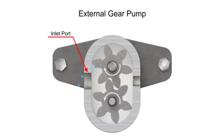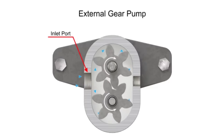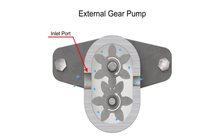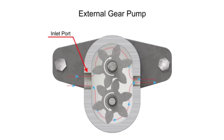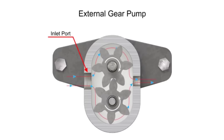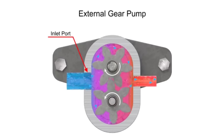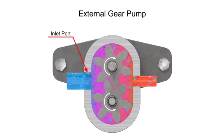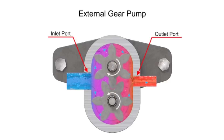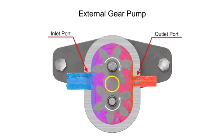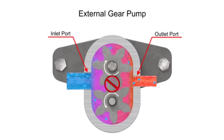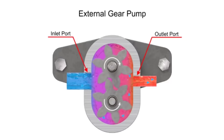Fluid flows into the cavities and is trapped by the gear teeth. As the gears rotate, a flow path is created around the outside of each one. Fluid trapped in the slots between teeth is carried around and discharged into the cavity with the outlet port. Meshing of the teeth in the center of the pump seals the outlet port from the inlet port — no fluid passes between the gears.